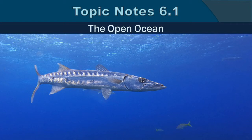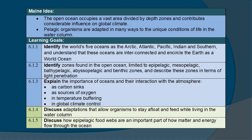Topic Note 6.1: The Open Ocean. Come venture into the big blue, where there's nowhere to hide and really amazing adaptations to both access food and avoid being eaten. The main ideas here are that the open ocean occupies a vast area divided by depth zones and contributes considerable influence on global climate. Pelagic organisms are adapted in many ways to the unique conditions of life in the water column.